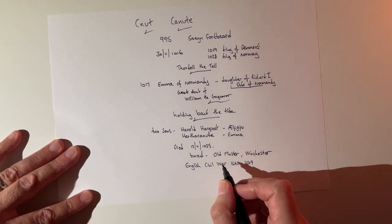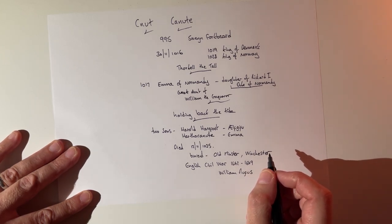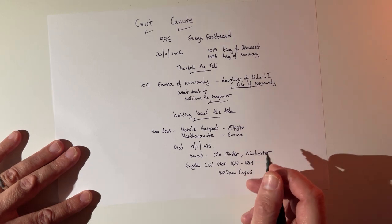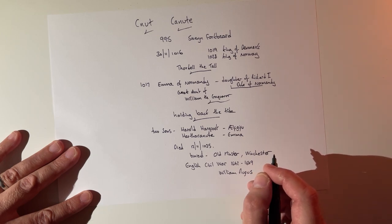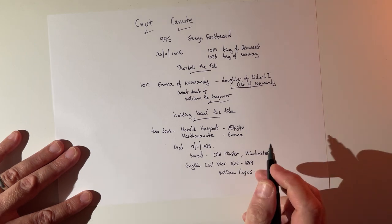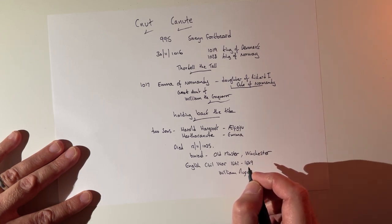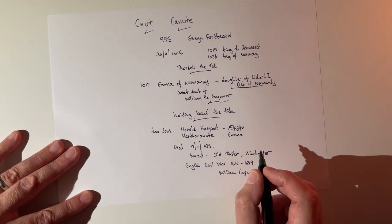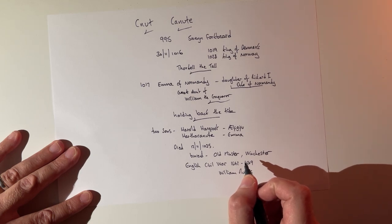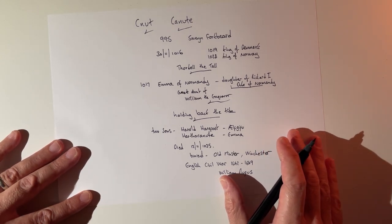His bones got mixed up with other bones from other graves in the Old Minster — most notably, those of William Rufus, King William II, son of William the Conqueror, who became king in 1087. They were later tidied up and put back in their boxes, but I suspect to this day William Rufus is probably down there with three legs and Canute with one. All the bones got mixed up, and in the 1600s they weren't going to be able to tell them apart. So Canute and William Rufus are joined together forevermore.